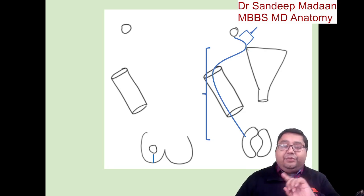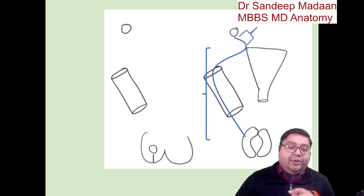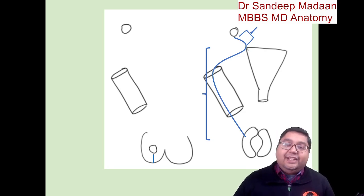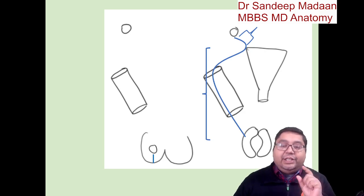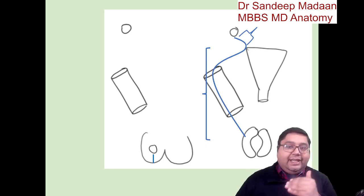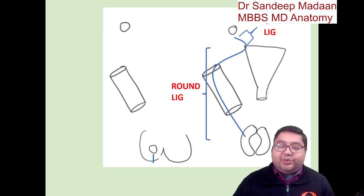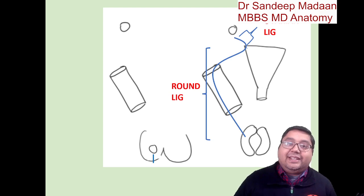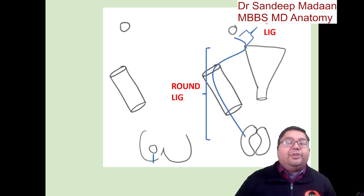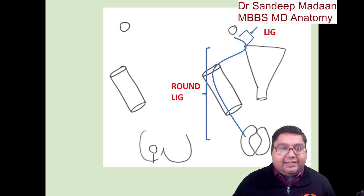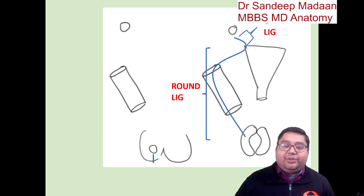But if you compare with female anatomy, in the female, gubernaculum will not be lost. Gubernaculum will persist, and it will be converted into two ligaments. One between the ovary and the uterus — that is the ovarian ligament. And the second between the uterus and the labia — that is the round ligament. So both the ovarian ligament and the round ligament are derivatives of the gubernaculum.